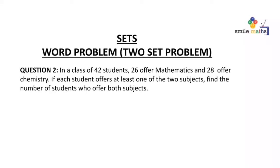For question two, in a class of 42 students, 26 offer mathematics and 28 offer chemistry. So 28 and 26 shows you that definitely there will be some students who offer both subjects. If each student offers at least one of the two subjects, find the number of students who offer both subjects.